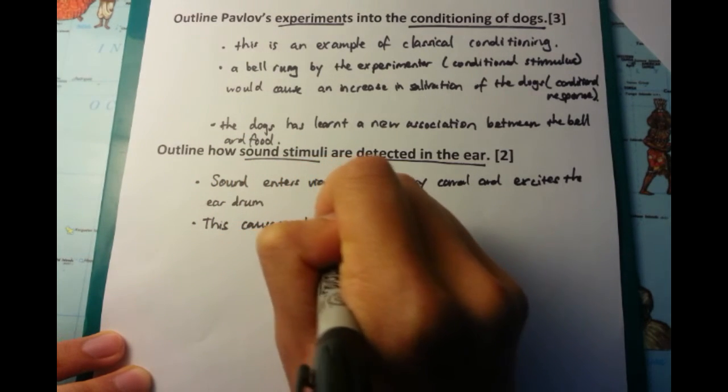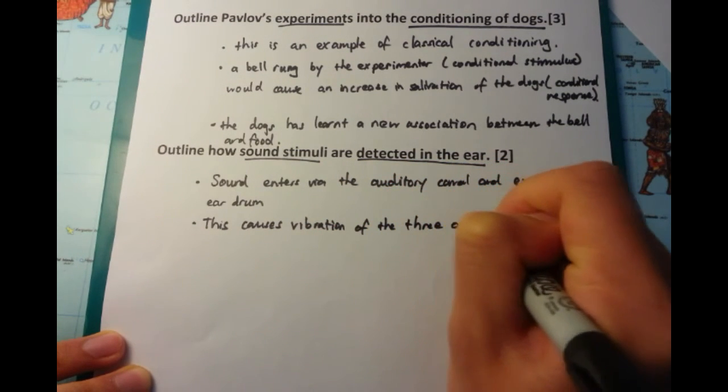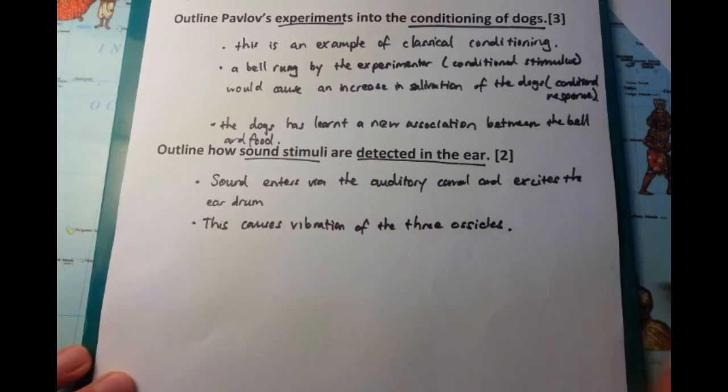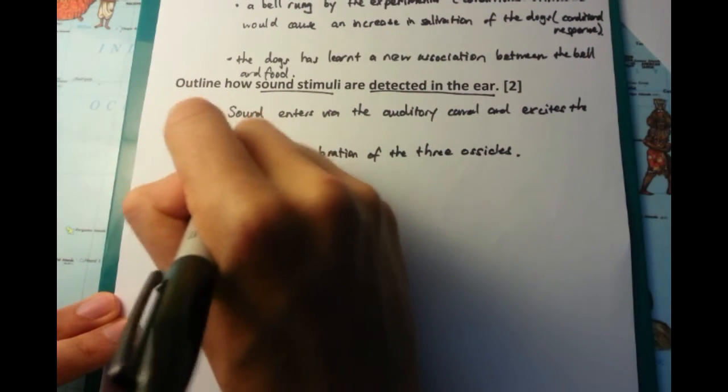After you have the vibration of the ear drum, then that vibration is transmitted along the three ossicles or ear bones which are found in the middle ear. And this amplifies the sound.